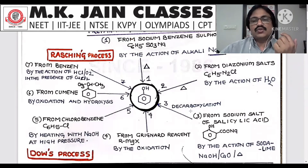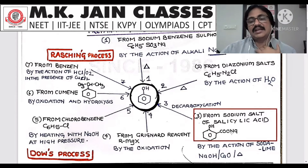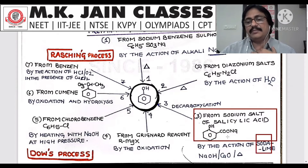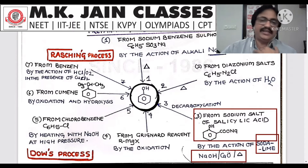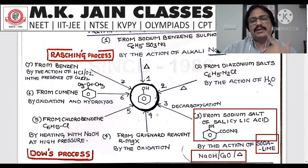Third: from the sodium salt of salicylic acid — this is a new compound called sodium salicylate. It has an OH group and at the ortho position a COONa group. By the action of soda lime (NaOH and CaO) on heating, you will get phenol. From sodium salt of salicylic acid — I keep telling you: when you read this power map, you should learn it.